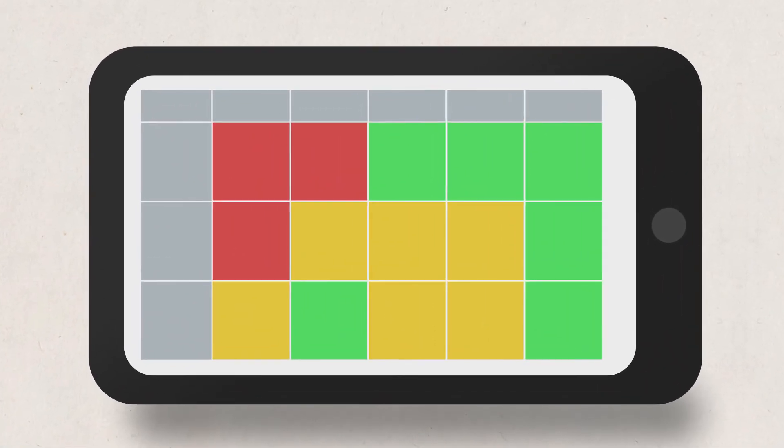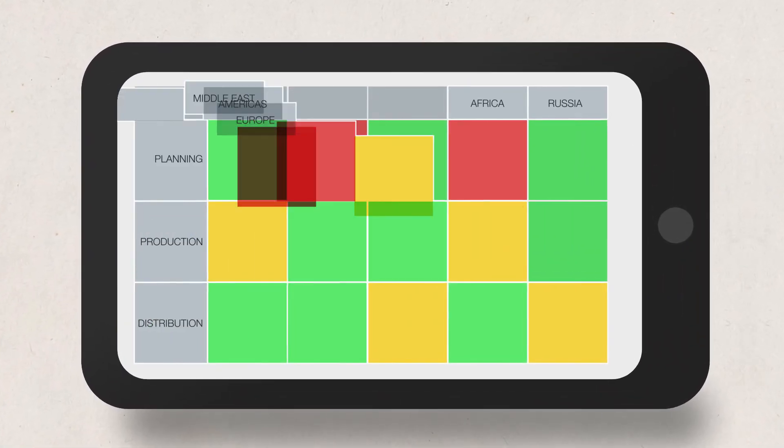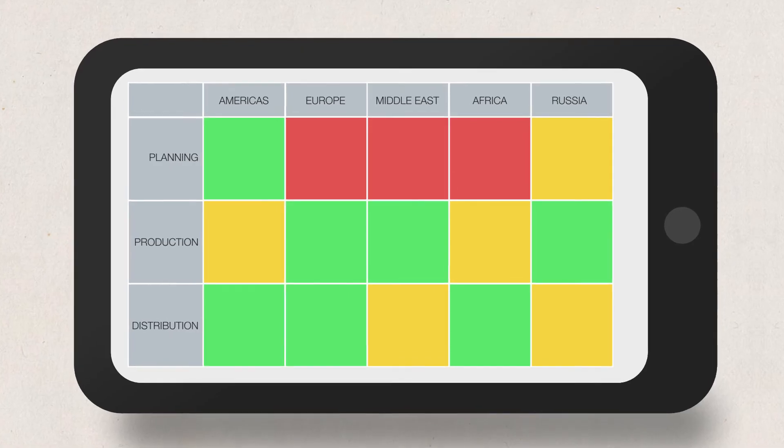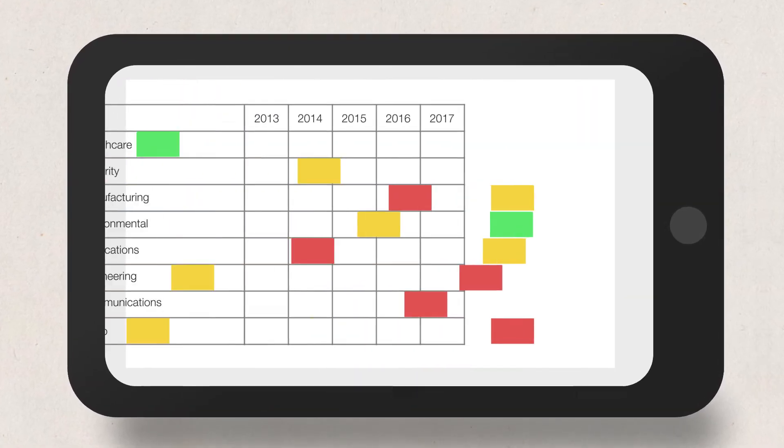Within business architecture, professionals use heat maps to identify the level of performance for different divisions of the company, to set investment priorities, and to highlight areas of concern.